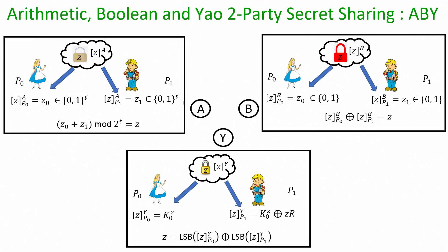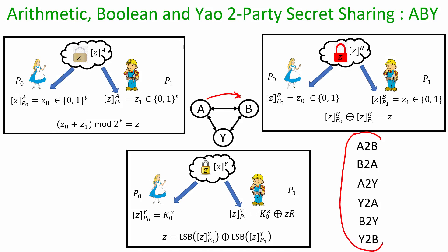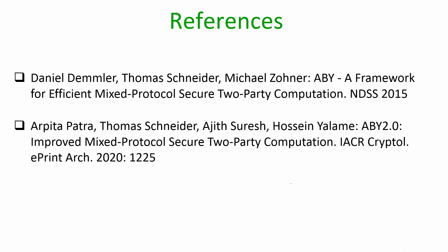These are our three different worlds: the arithmetic world, the Boolean world, and the Yao world. In the arithmetic world values are L-bit numbers; in the Boolean and Yao worlds values are bits. What we want is a switching mechanism — if a value is secret shared in the arithmetic representation, without disclosing it we would like to switch to the Boolean representation for the same value Z. Since we have three worlds, we need protocols for six possible switching mechanisms, which we will see in the next lecture.